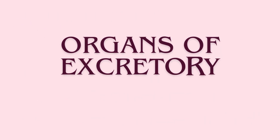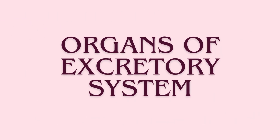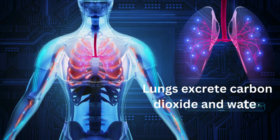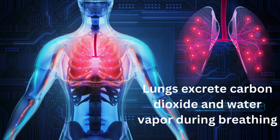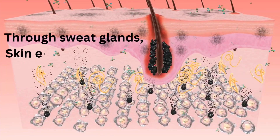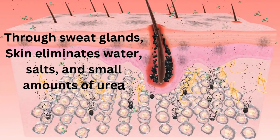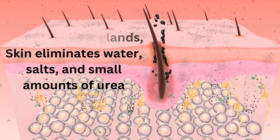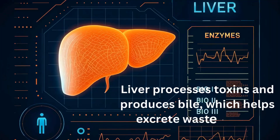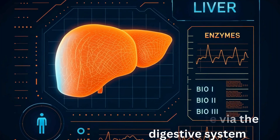Several organs play an important role in the removal of waste from the body, like the lungs which exhale carbon dioxide, skin which releases sweat containing salts and urea, and the liver which processes toxins into safer forms.